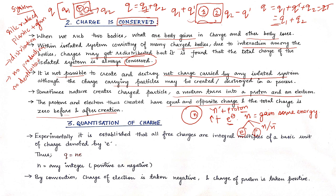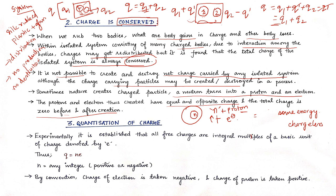The neutrino has no charge — neutrinos are chargeless. But the electron and proton have equal and opposite charges: minus e for the electron and plus e for the proton. After the neutron divides, the system still has the same total charge. Charge is neither created nor destroyed but can get redistributed within the system.